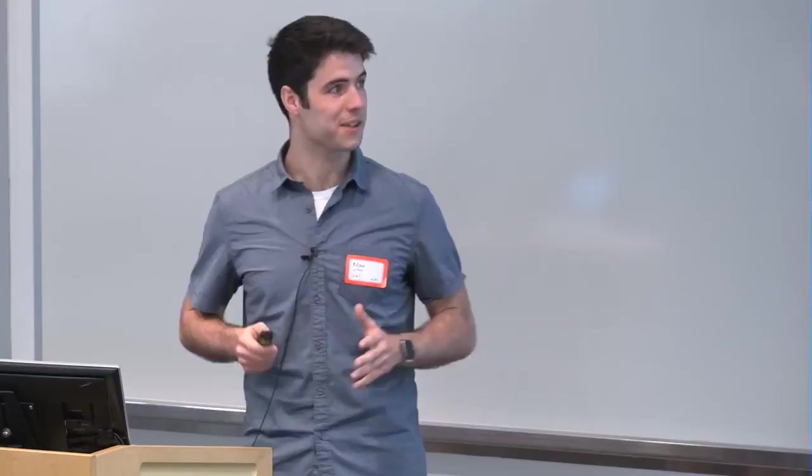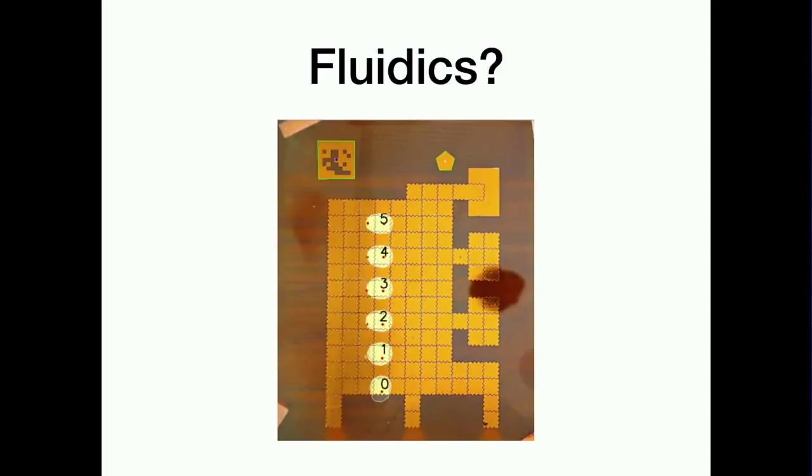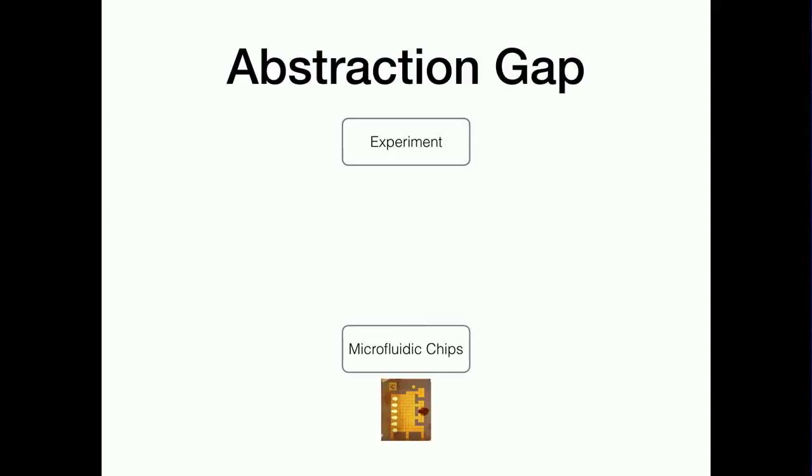So what are microfluidics? Broadly, microfluidics is a kind of technology that lets you manipulate small fluids. And why would you want to do this? If you want to automate any sort of chemical or biological experiment, it's going to be expensive to have grad students running around in the lab pipetting things from one tube to another. So the way you automate this is with microfluidic devices. And this is just a video of one kind of device. I'm going to show you some others later on. And like I said, you want to use these to automate experiments. But unfortunately, these aren't really used for experimentation very frequently because there's this abstraction gap.